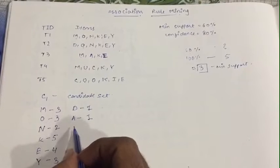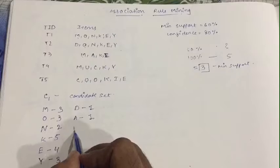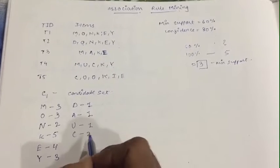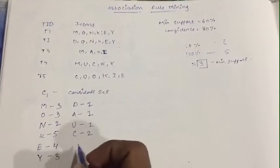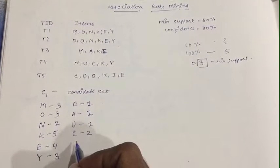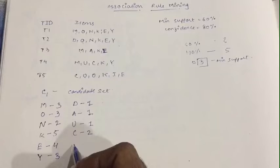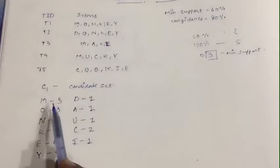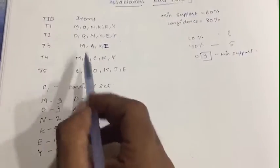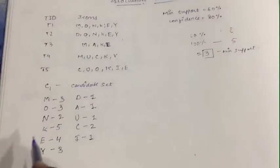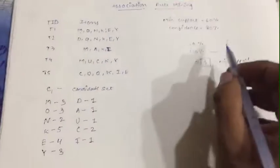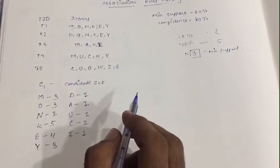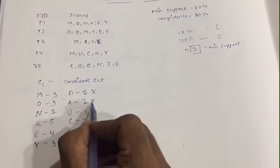Count item E: one, two, three. And item Y: one, two, three. You just have to write how many times each item is coming in the total transactions. Now you have to apply minimum support — any values below three you have to cancel those values.